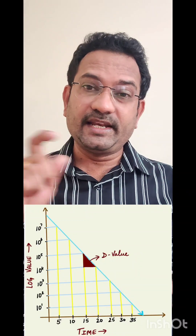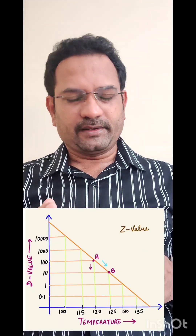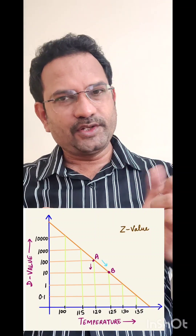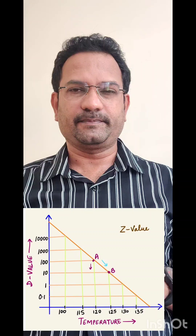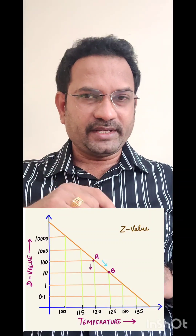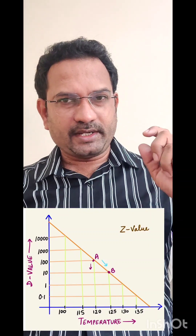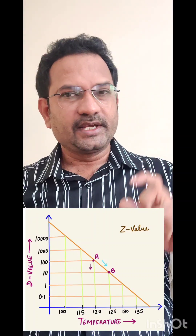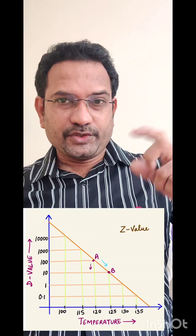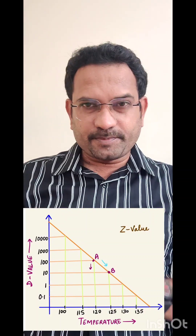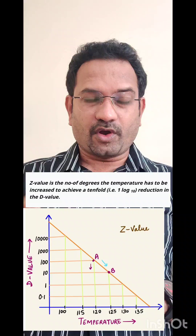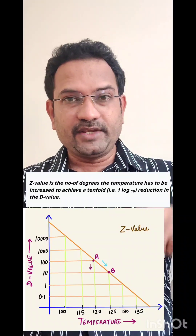D value is related to time, but the question is about total lethality, so D value is not the answer. Now for Z value: on the graph, D values are on the Y-axis and temperature is on the X-axis. The rise in temperature which causes a 10-fold reduction in D value — from 100 to 10 — is called Z value. Since Z value is about temperature, it is also not the correct answer.